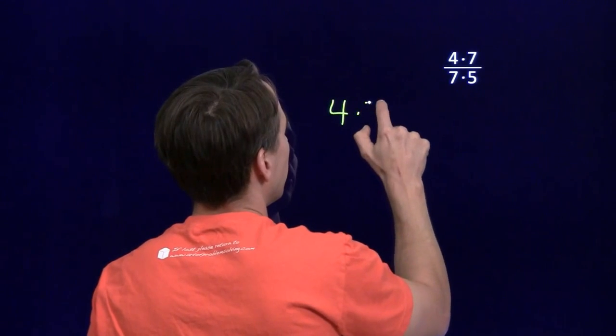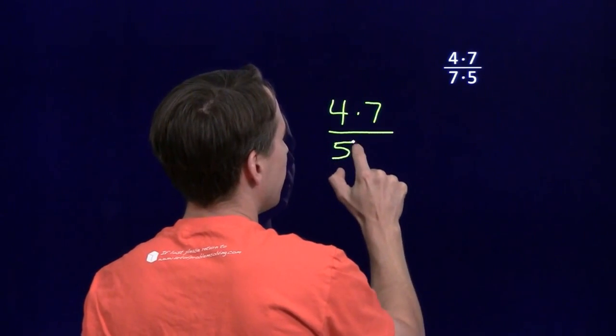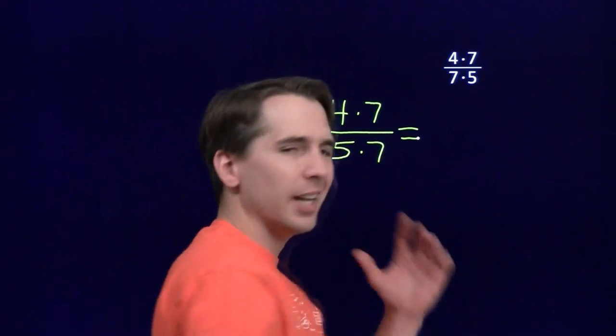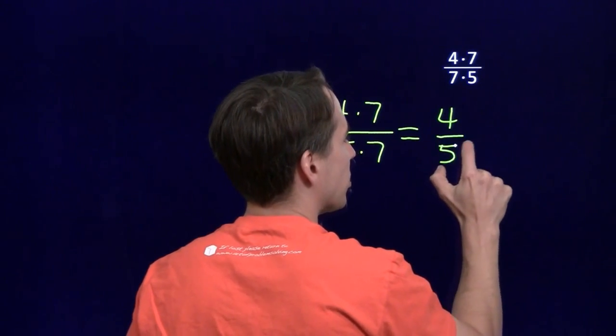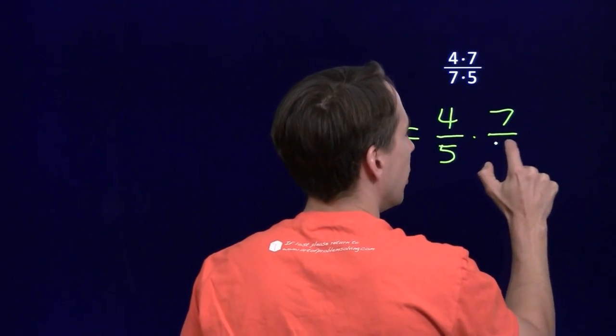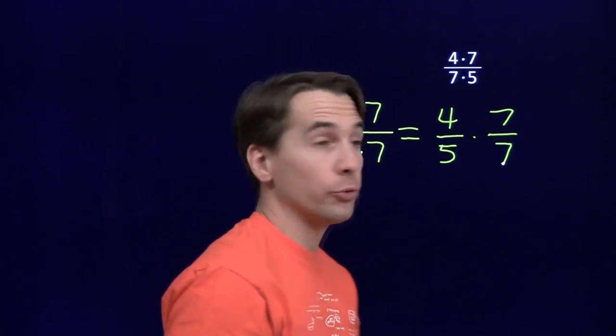So let's take a good look at why we can cancel here. We'll start, of course, by flipping the denominator. 7 times 5 is the same thing as 5 times 7. And we do that because then I can break out the 7s into their own fraction, just using fraction multiplication. All we're doing here is using the same old good math rules we already know.